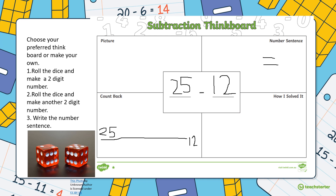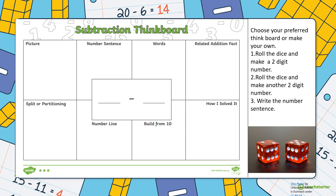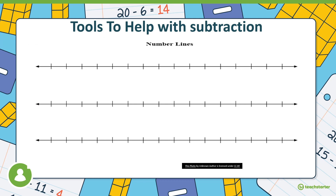It's just a game — you can do it as many times as you like. There is another activity following this, so you might want to do this for 10 minutes and then move on. Here's a sample of a different think board — you don't have to do every step. It's got writing in words, related addition facts, number sentences, split or partitioning where you draw the tens and ones, and a number line. You could even take a photo and put it on the Google Classroom. Just choose the option that's right for you.